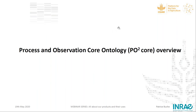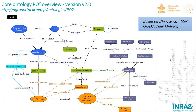Here is the global overview of the ontology — I'll go into more detail on the next slides. I want to mention that we wanted to reuse already existing ontologies before developing PO2. PO2 is developed based on BFO as FoodOn is. We also reused SOSA and SSN for sensor observation and samples management, QUDT for units of measure, and the Time Ontology.